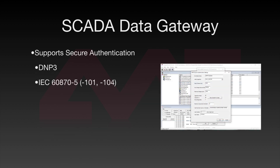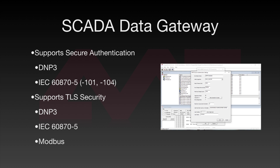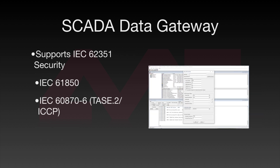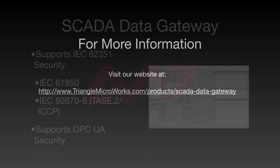The SCADA Data Gateway also supports secure authentication for DNP3 and IEC 60870-5, as well as TLS security for DNP3, IEC 60870-5, and Modbus. The SCADA Data Gateway also supports IEC 62351 security for IEC 61850 and IEC 60870-6 TASE-2 ICCP. It also supports security for OPC UA, as spelled out in the OPC UA specification.